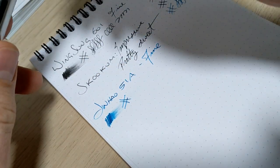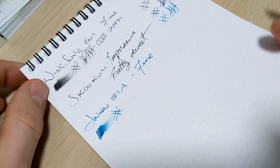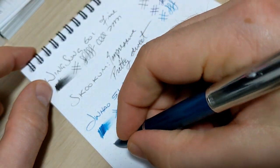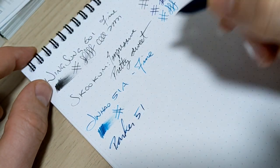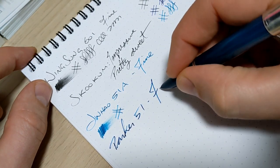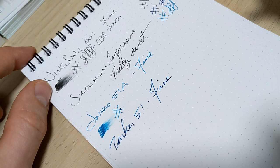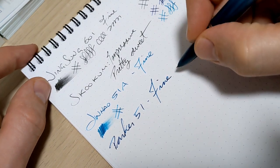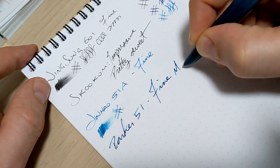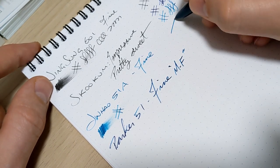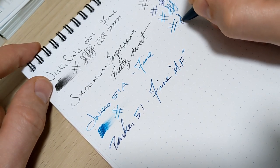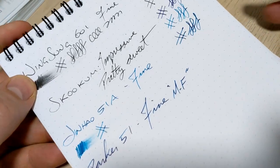We'll wrap it up with the Parker 51, has the same ink as well. This is a fine, this is a little bit of a wider fine, it's sort of like a medium fine. It is an MF and let's get you up here. Now of all the fine nibs I have, this is definitely one of the smoothest, especially for a non-gold.